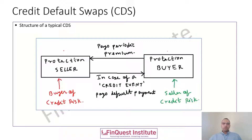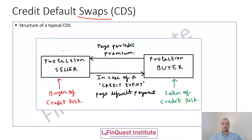As the name suggests, you see the word 'swap' here. Just like any other swap transaction, you'll have a certain set of cash flows involved. Those cash flows are marked here, and we'll understand the exact quantum of these cash flows in subsequent slides. But to understand the basic nature, the protection buyer will keep on making certain periodic payments to the protection seller.